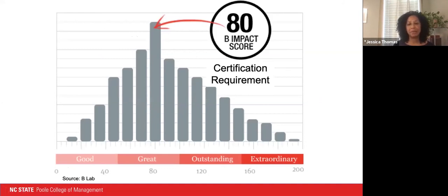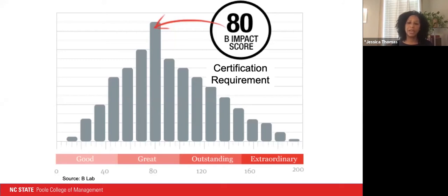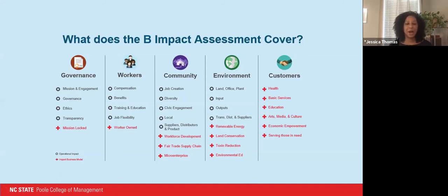The B Impact Assessment framework covers five areas — essentially an in-depth questionnaire helping companies measure and manage their impact anywhere from zero to 200 points and beyond. It provides a roadmap where companies can start anywhere and chart their progress. From a B Corp clinic perspective, our goal isn't so much getting companies certified but working with them to benchmark where they're starting and chart a path from good to great to outstanding to potentially extraordinary.